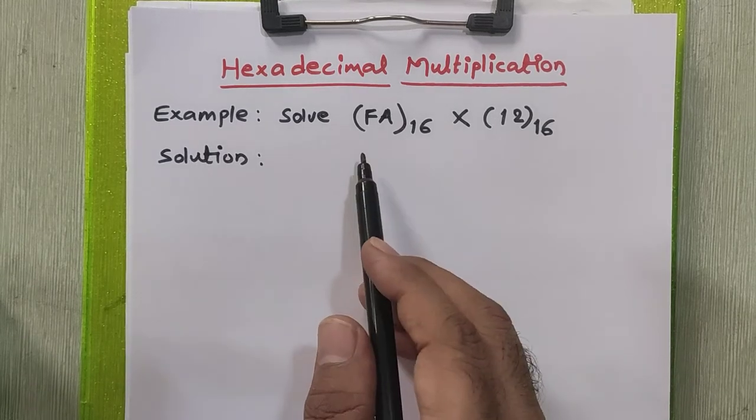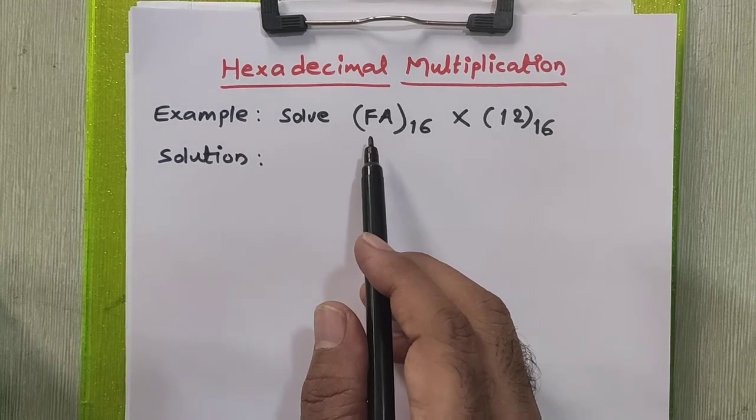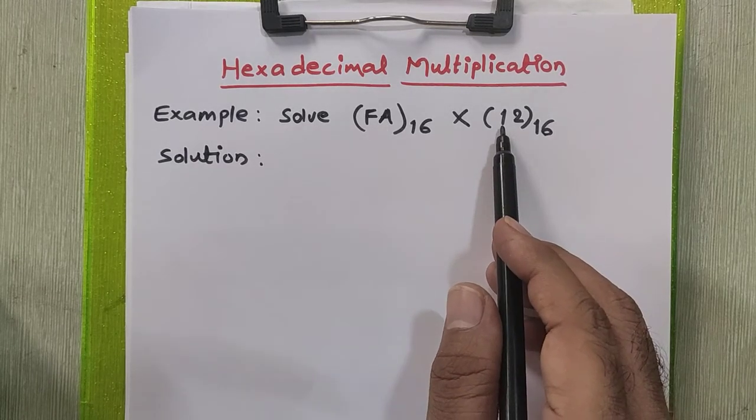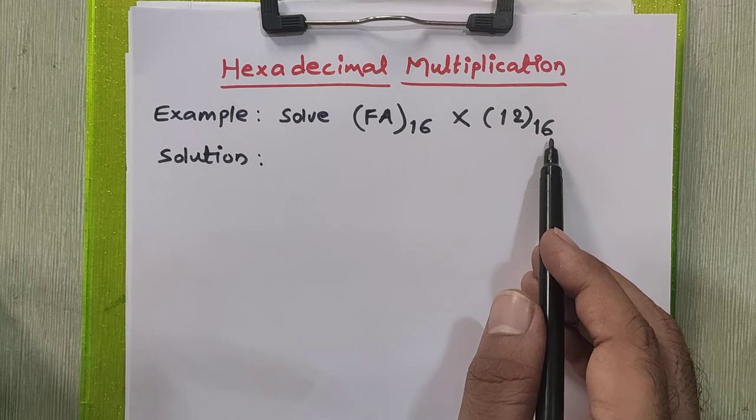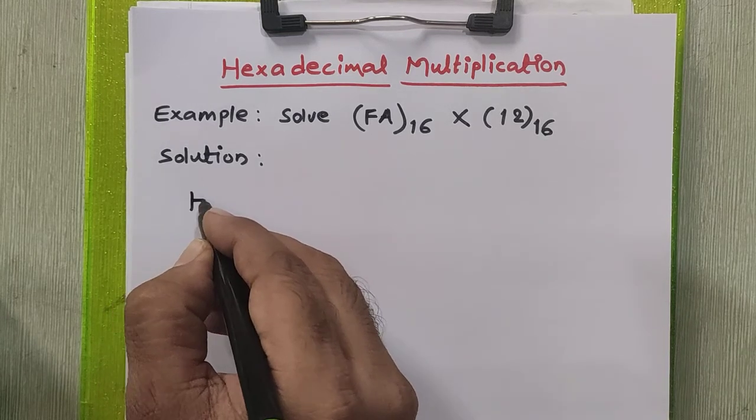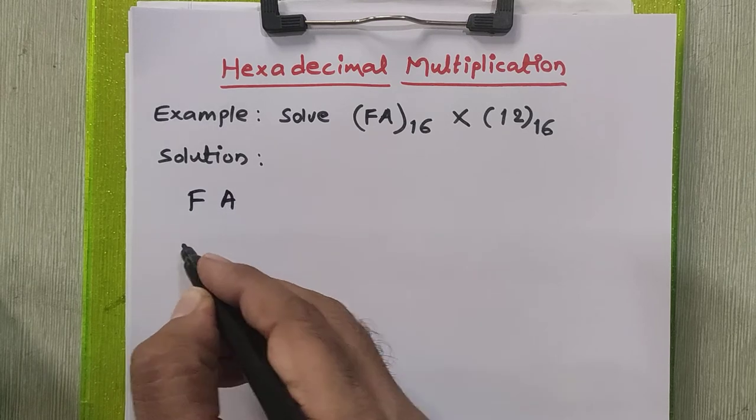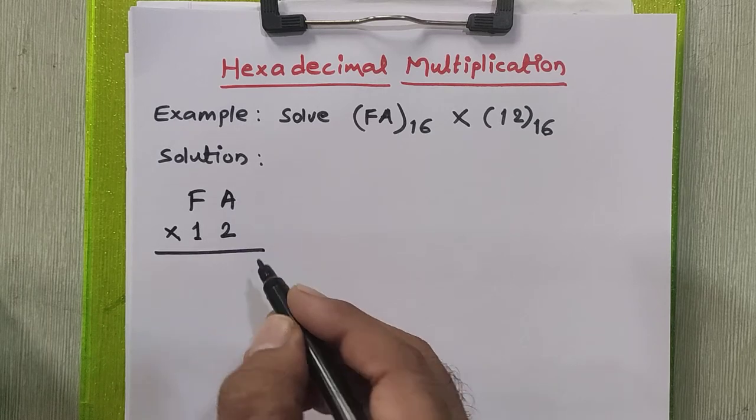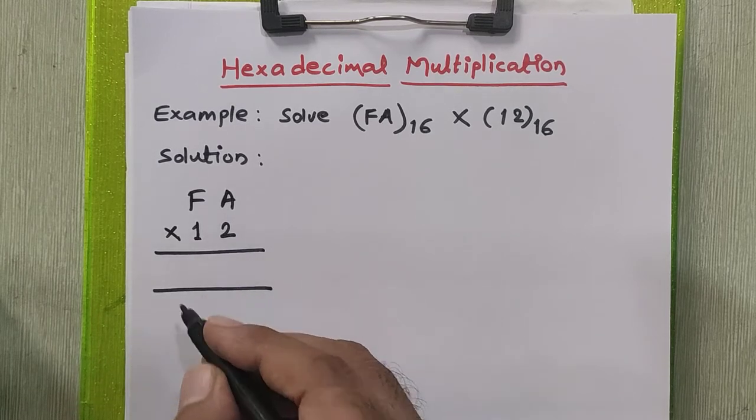Consider this example where we are going to multiply FA to the base 16 by 12 to the base 16. I'll write these given numbers as it is into the solution part. We'll write our answer into this text box.